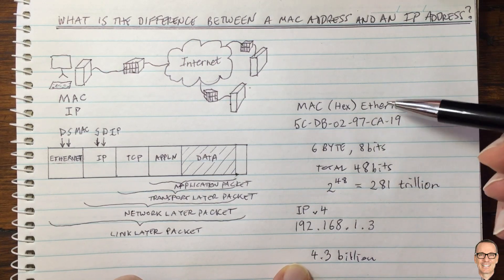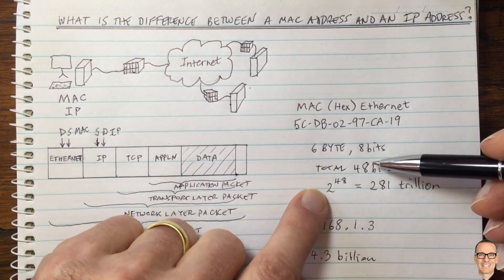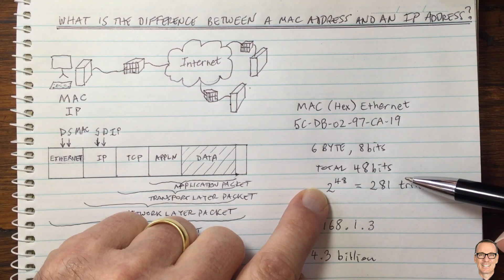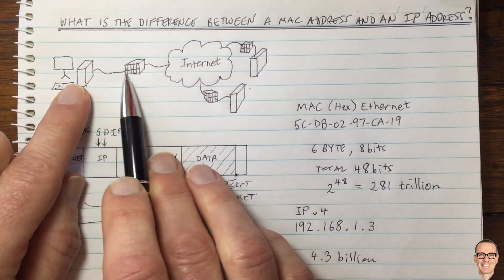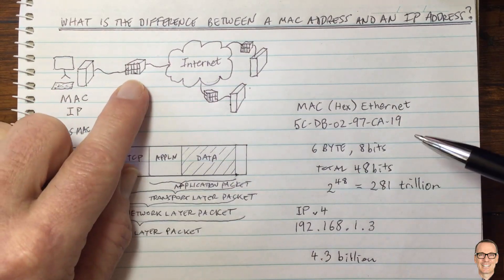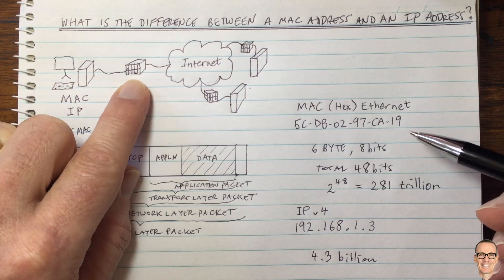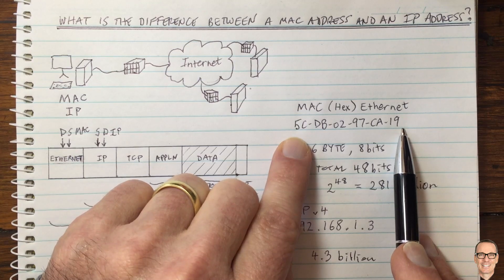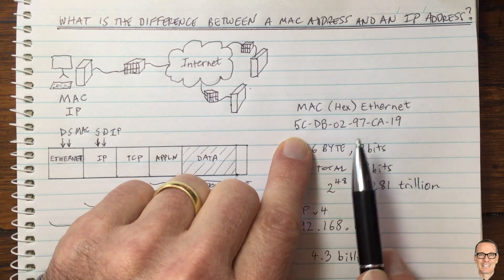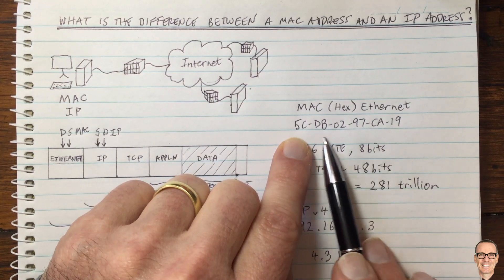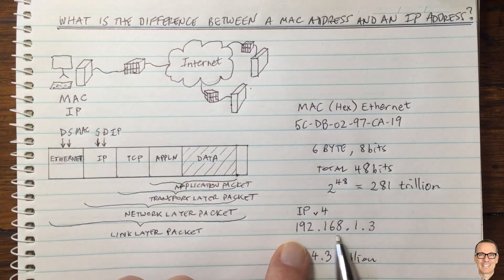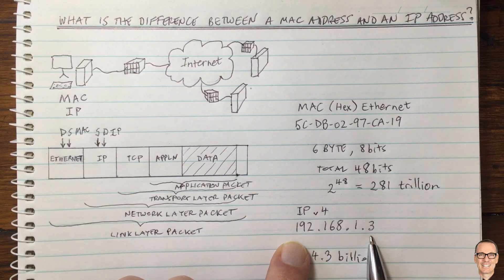One advantage of the MAC address is that you can connect your device to any local area network anywhere in the world — take your computer overseas, plug it in on an Ethernet connection — and within that local area network, it can immediately recognize packets being sent from a specific MAC address and route them through the LAN automatically. IP addresses are allocated in a hierarchical way, based on geography, and are assigned when needed.